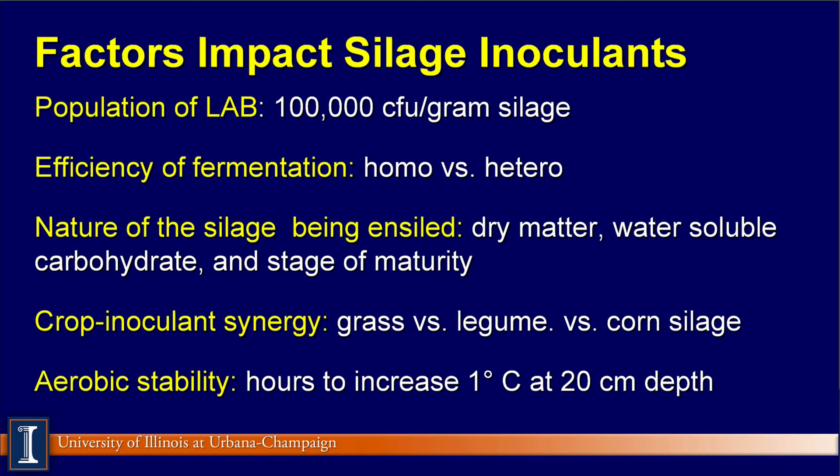Some inoculants are crop-specific, and some companies have unique bacteria for grass silage versus legume silage versus corn silage, so check with your representatives. Finally, check on aerobic stability — basically, how many hours does it take to increase one degree centigrade at 20 centimeters depth.